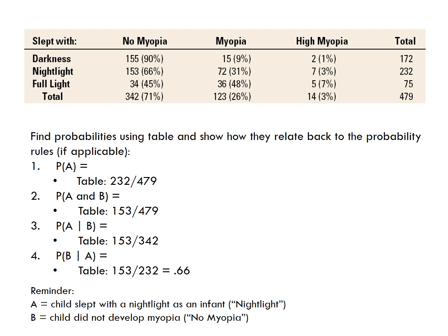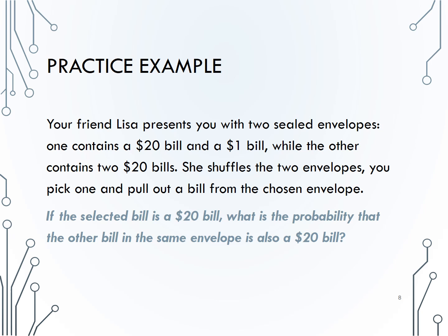Note that these two conditional probabilities are very different numbers. You cannot simply flip where the letters are and get the same value — conditional probabilities depend critically on what you are conditioning on. If you've heard of the Monty Hall problem, this is a similar counterintuitive result. Read through this example and fill in a table to represent the situation. The two events of interest are which envelope is selected — $21 or $40 — and which bill is selected — the $20 bill or the $1 bill.